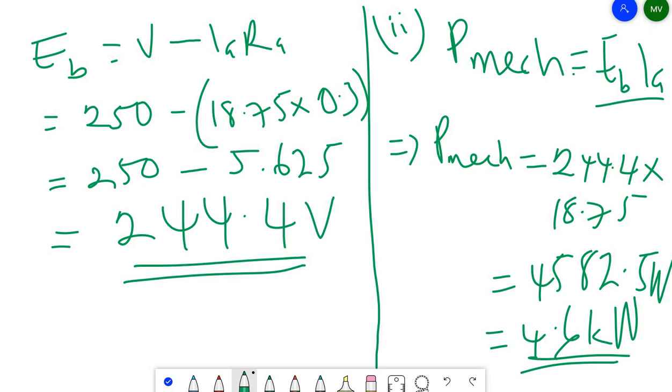The resistance of the armature circuit is 0.4 ohms. The armature is wound with 522 conductors and useful flux per pole is 0.02 weber. Calculate the speed.